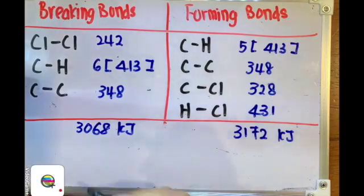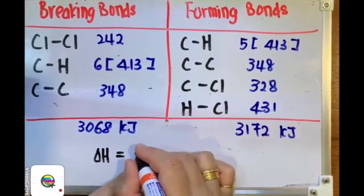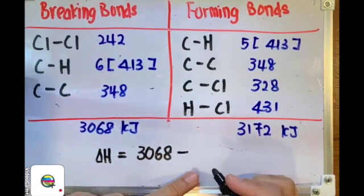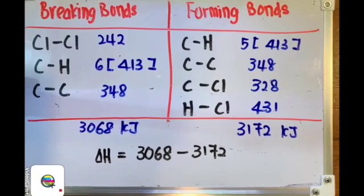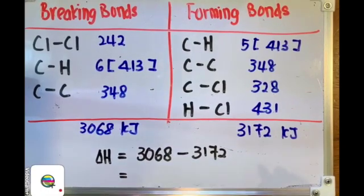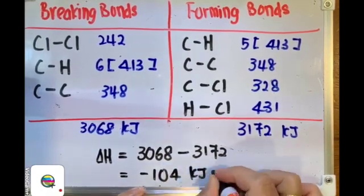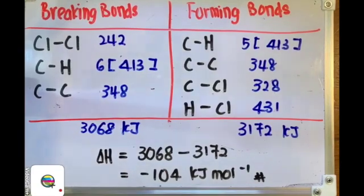Last step is the calculation for our enthalpy, heat enthalpy, whereby we are taking the total amount of energy needed to break the bond, which is 3,068, minus total amount of energy released when forming the chemical bonds, which is 3,172 kilojoules of energy. And our final answer is negative 104 kilojoules of energy, which means the substitution between chlorine gas as well as ethane under UV light is actually an exothermic reaction.